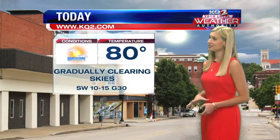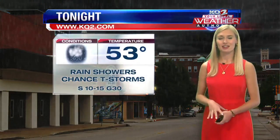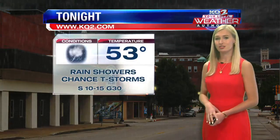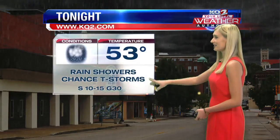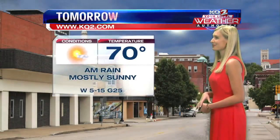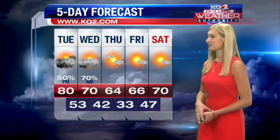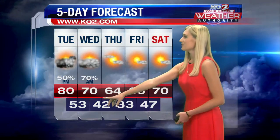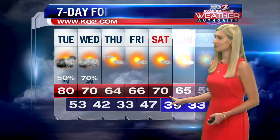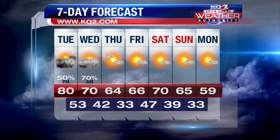We'll see gradually clearing skies and a windy afternoon with a high of 80 degrees. Moving into tonight, thunderstorm chances for the area with a low of 53. And for tomorrow, 70 and sunny with a little bit of rain for the morning. After that cold front moves through overnight tonight, we'll see much cooler temperatures as we end the week with sunshine continuing.